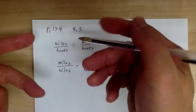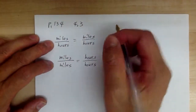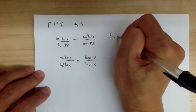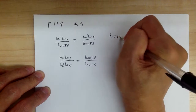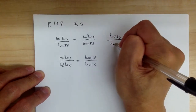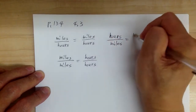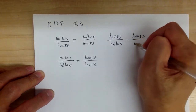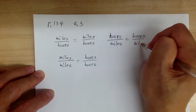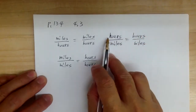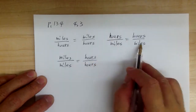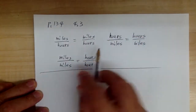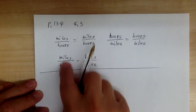It doesn't matter if you flip upside down. So like this one over here, you can also have the hours over miles, equal to hours over miles. So as long as you line up horizontally, it doesn't matter if it's upside down or not. And you can also line it up vertically.